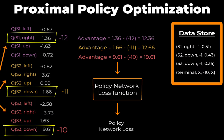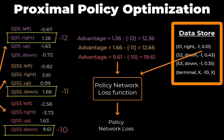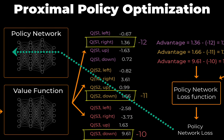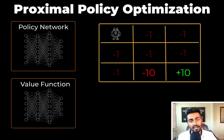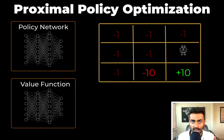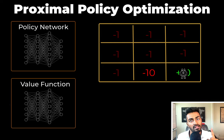We then use the same advantage and probabilities stored previously to determine the loss for the policy network. The loss is backpropagated through the policy network so its parameters are updated, and we repeat this process for all batches of data. Effectively, the policy network and the value function network get better over time as they learn together, and Frank learns to make better and better decisions to reach that plus-10 reward square. This is an overview of one iteration of proximal policy optimization.